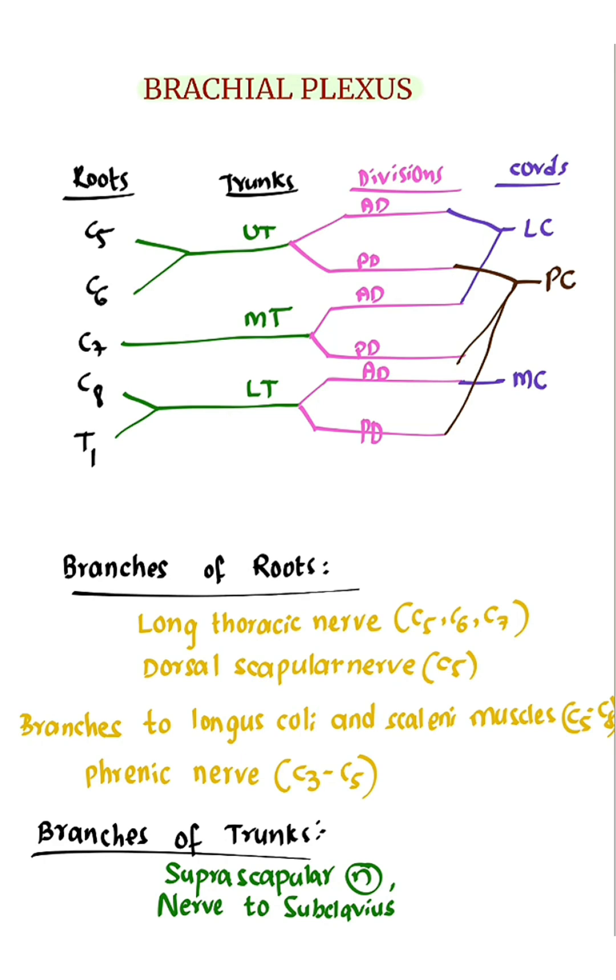Now let's see branches of brachial plexus. Branches of roots: Long thoracic nerve from C5-C6-C7 roots.